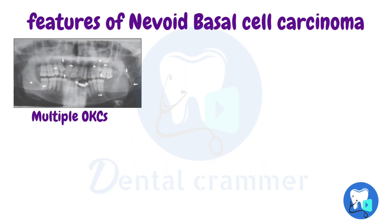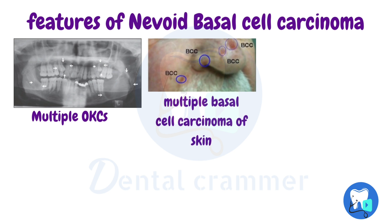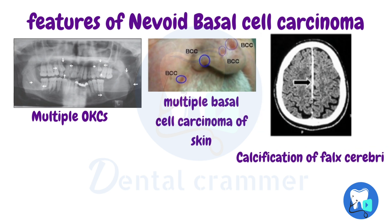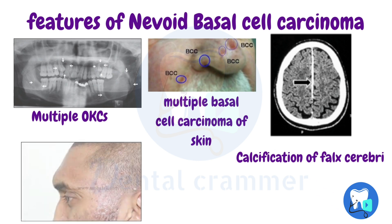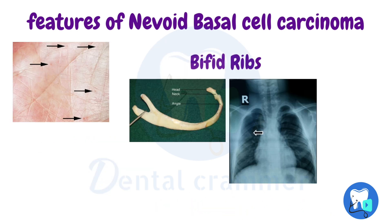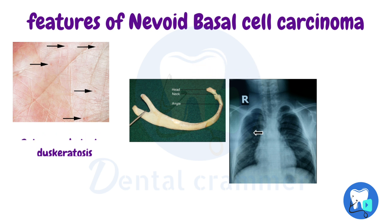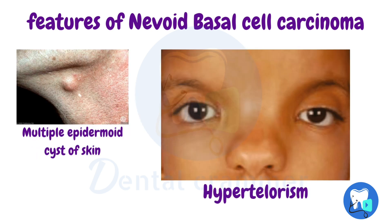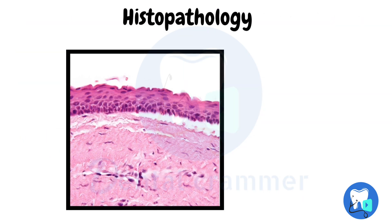Important features of naevoid basal cell carcinoma syndrome include multiple OKCs, multiple basal cell carcinomas of the skin, calcification of the falx cerebri, frontal bossing, palmar and plantar dyskeratosis, bifid ribs, multiple epidermoid cysts of the skin, and hypertelorism.